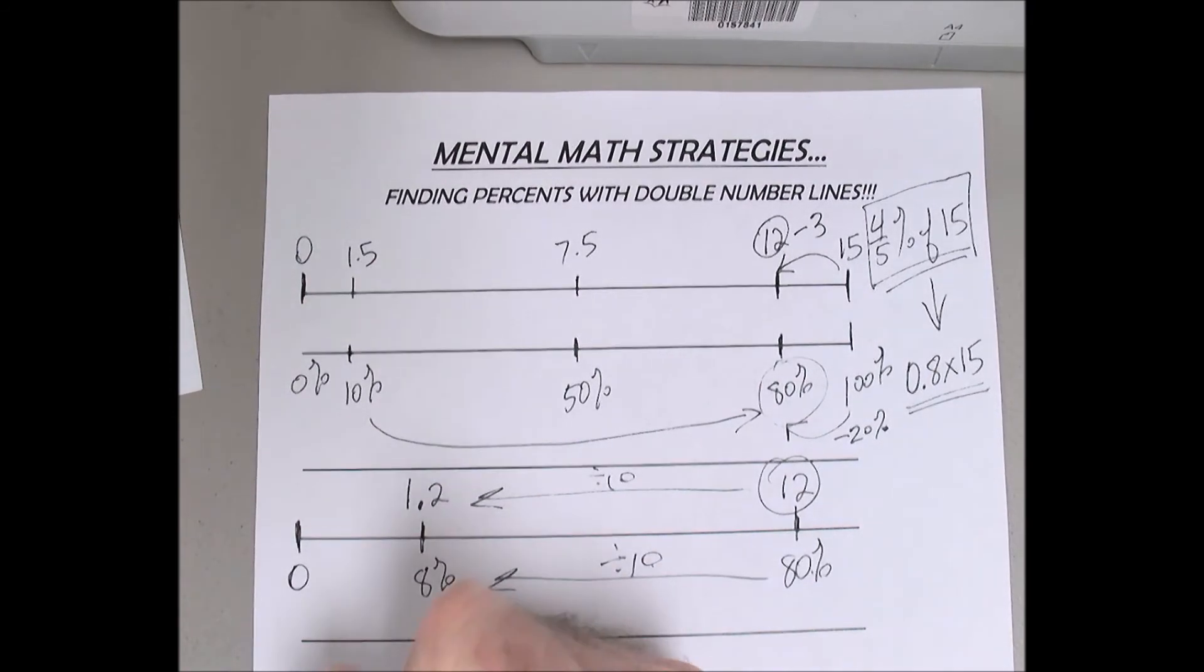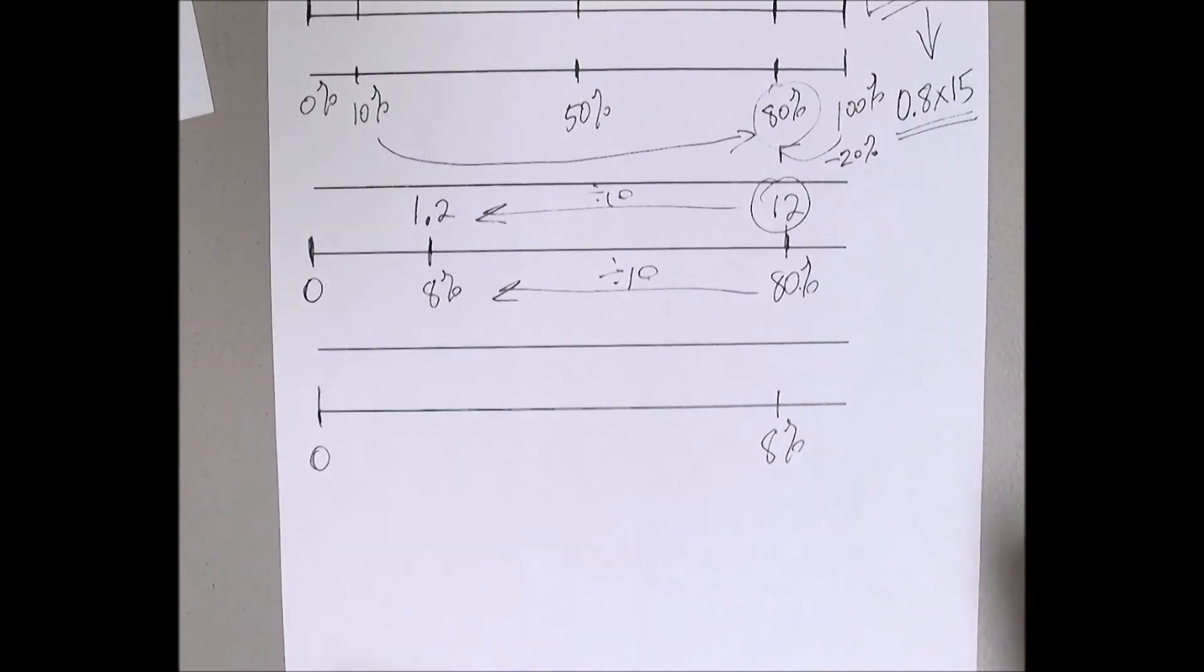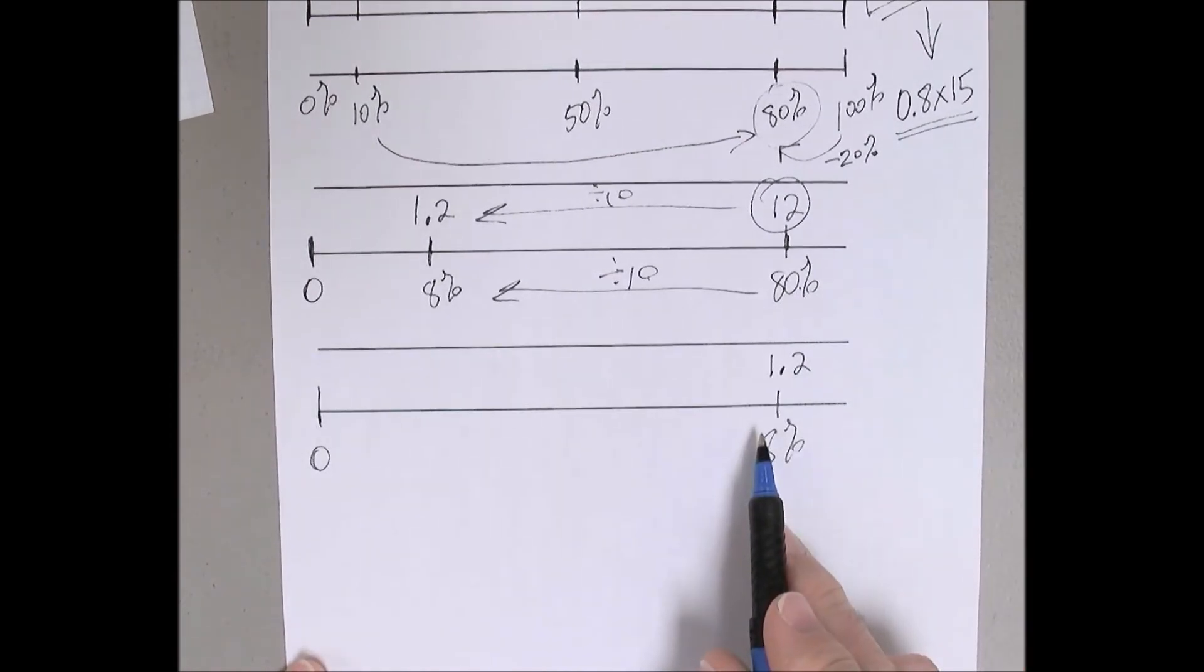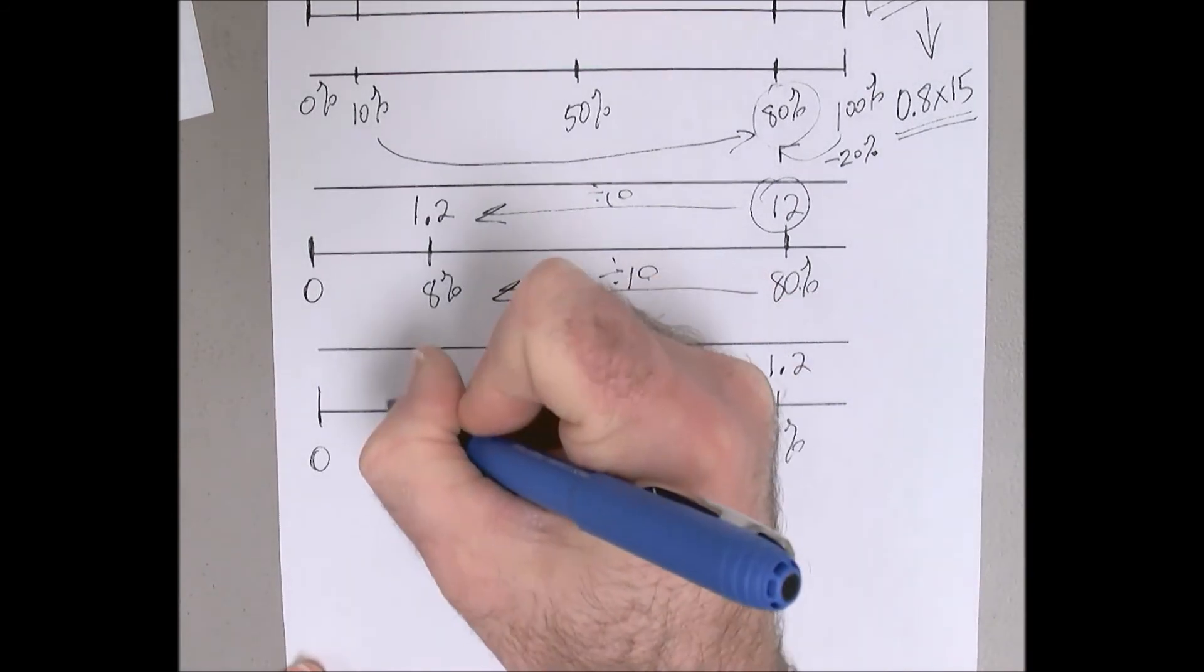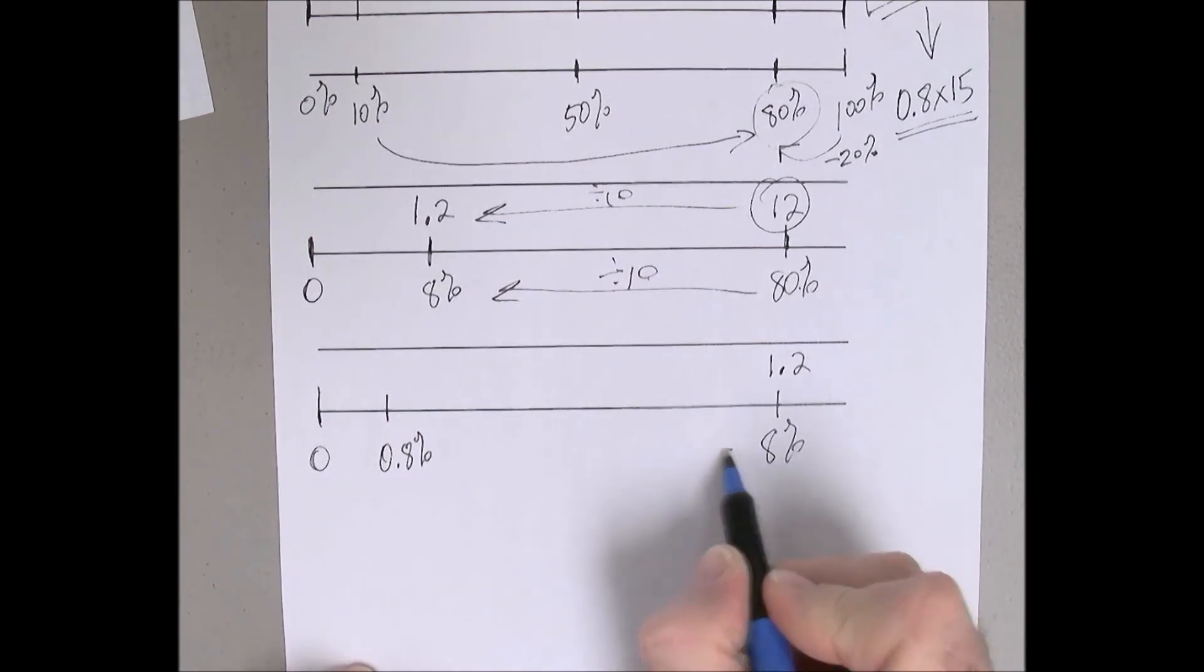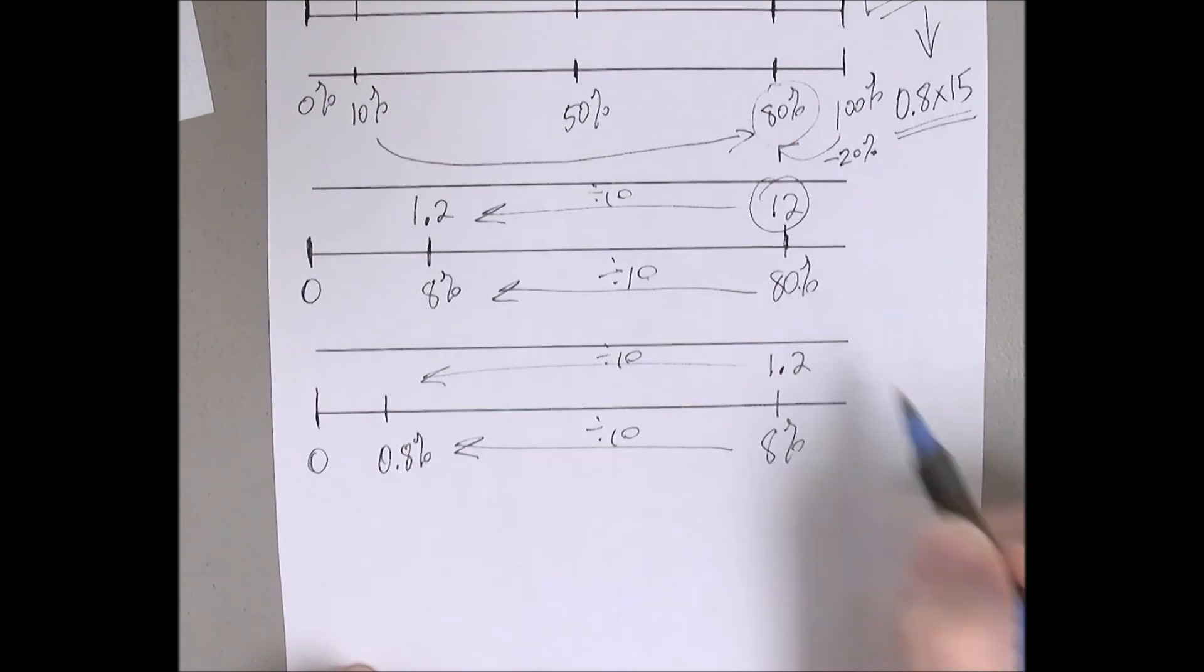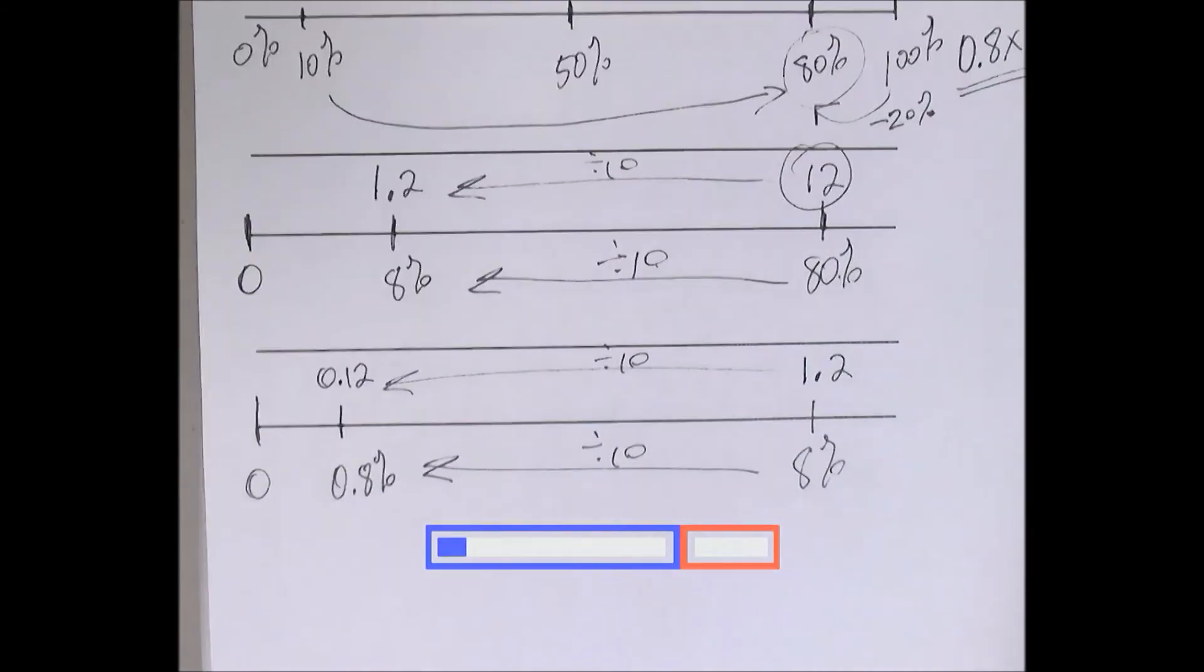Now let's do a close-up of that. So 0, this is 1.2. Is there going to be a connection between 8 percent and 0.8 percent? Divide by 10. So this will have the same proportion. And what's that going to be? 12 hundredths or 0.12.